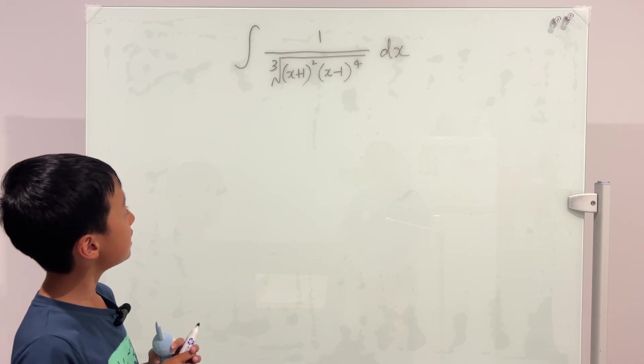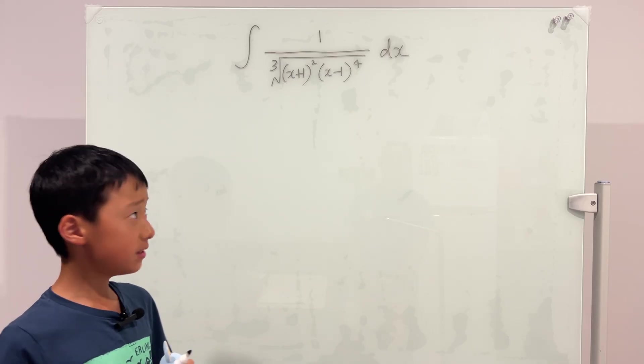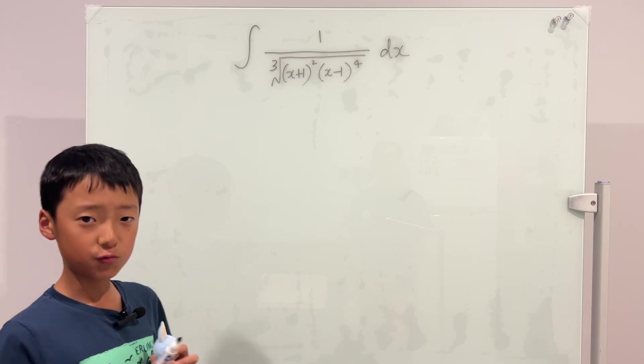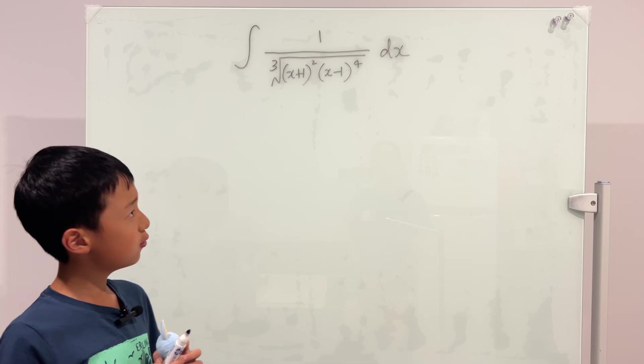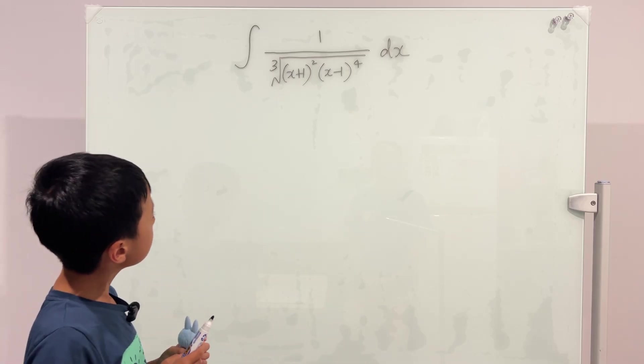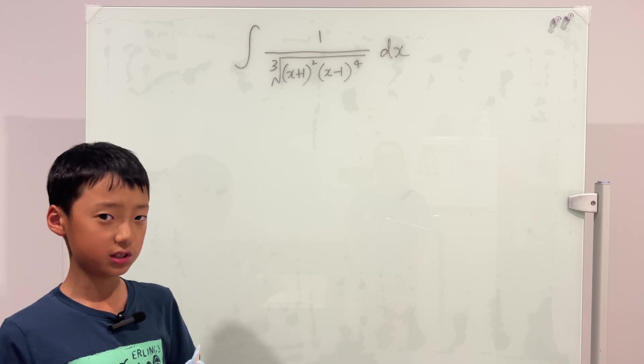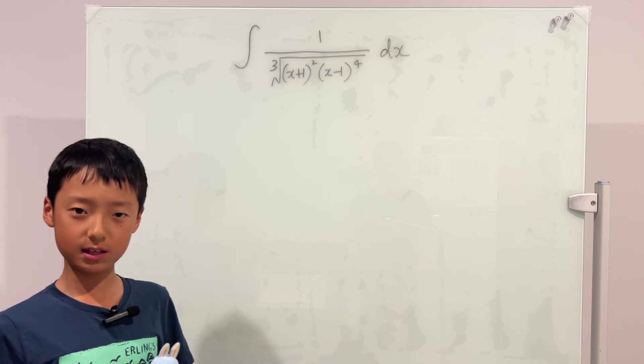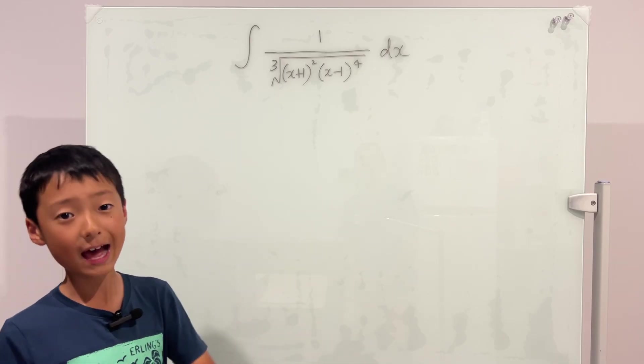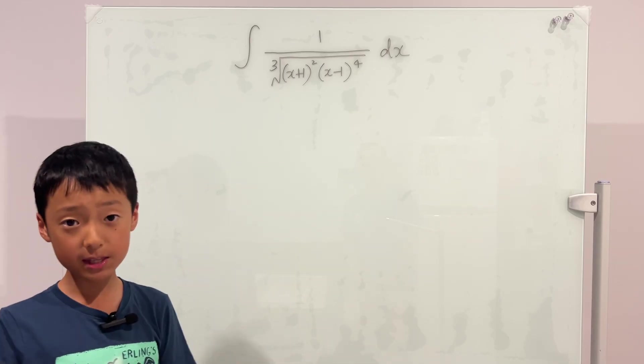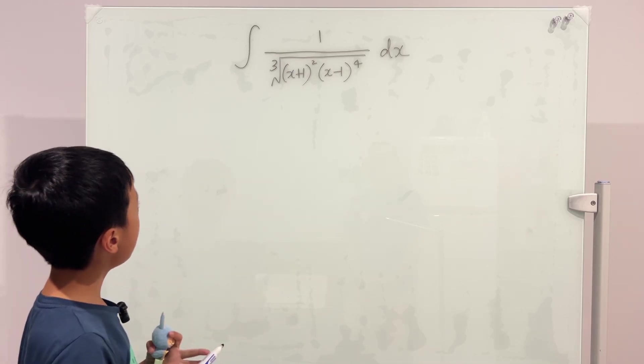We have this integral and there's a bunch of powers, but the thing that we really don't like is the cube root. If we want things to get simpler inside of a cube root, then don't we want cubes inside of a cube root? We can take these cube terms outside of the cube root and maybe the inside will be a bit easier.